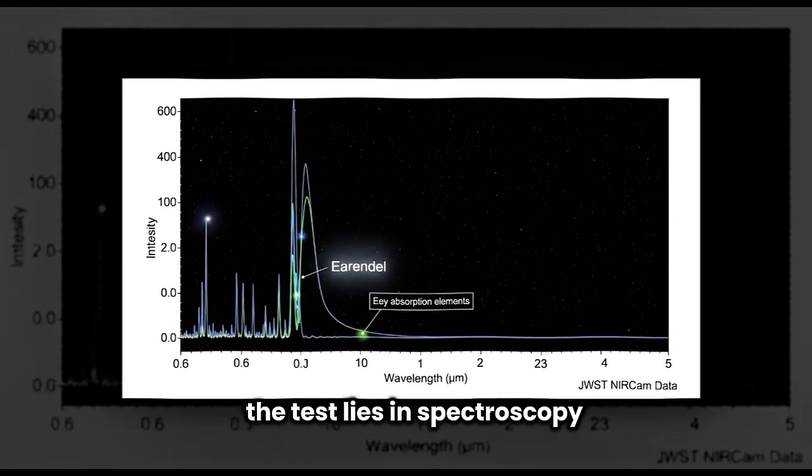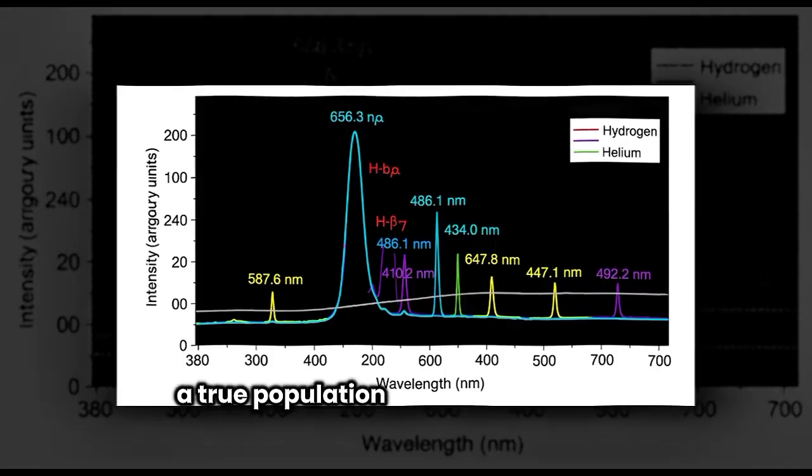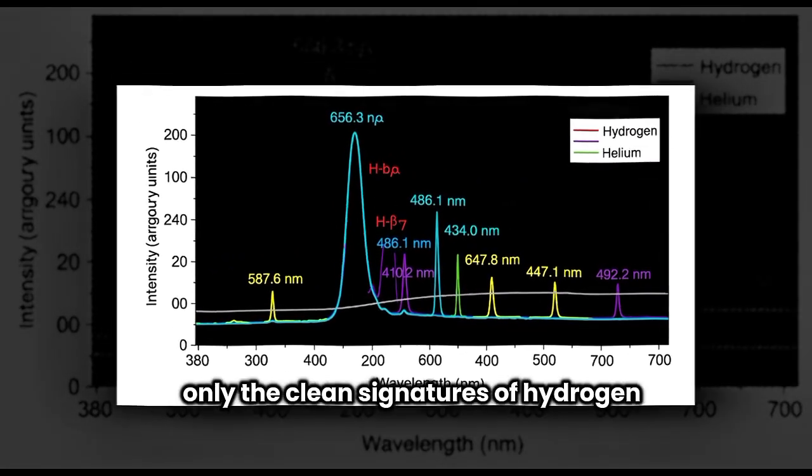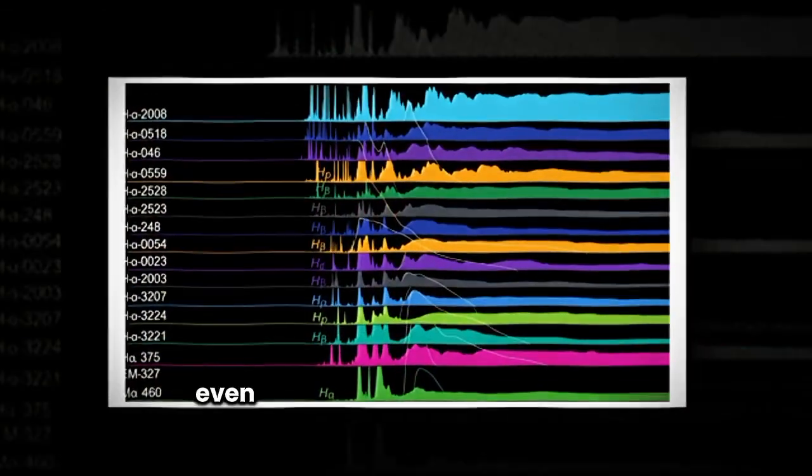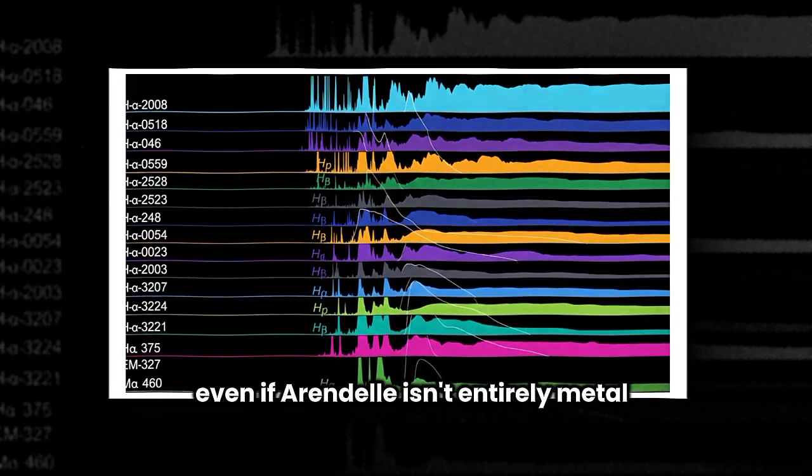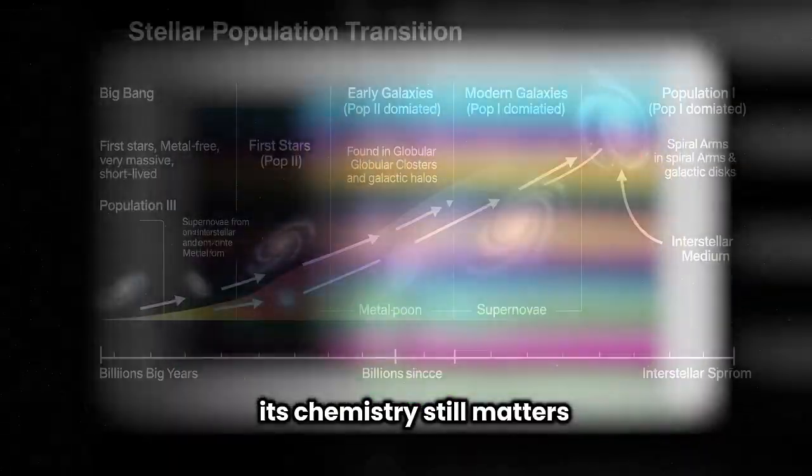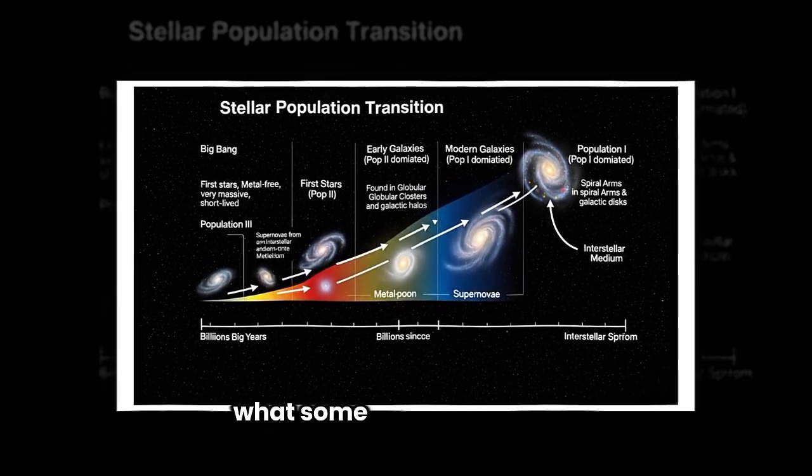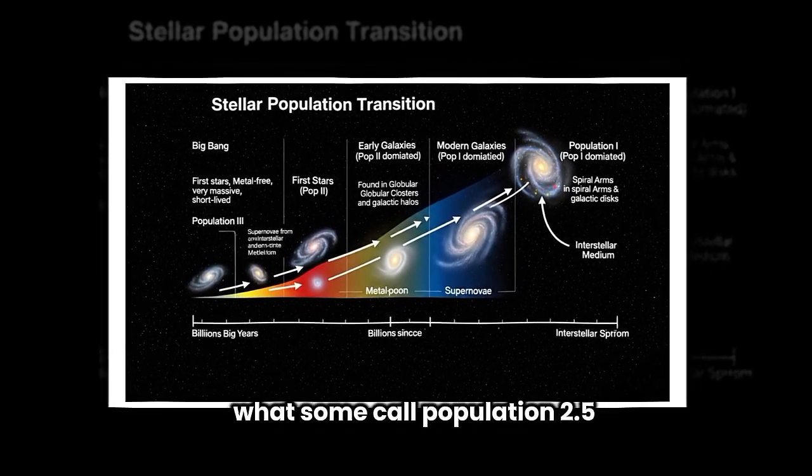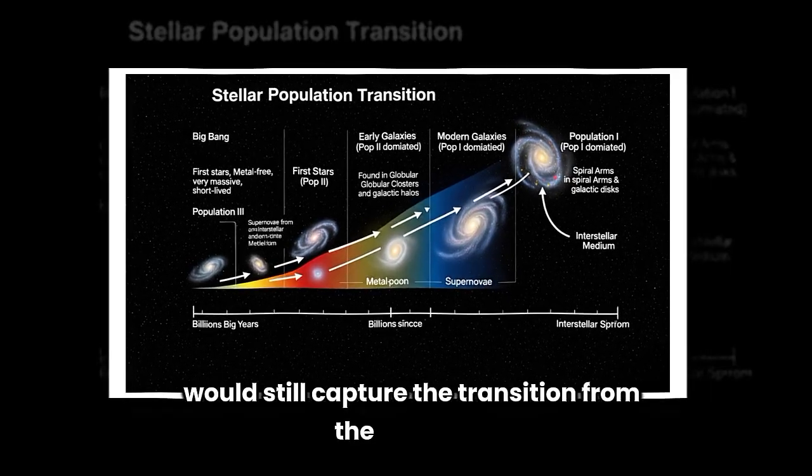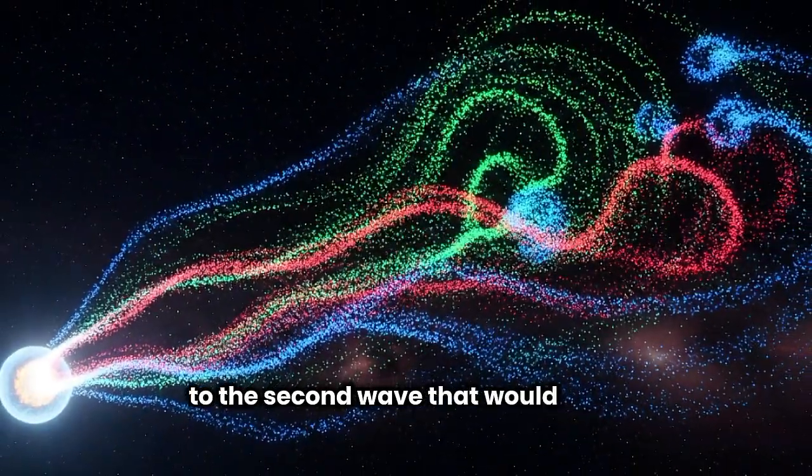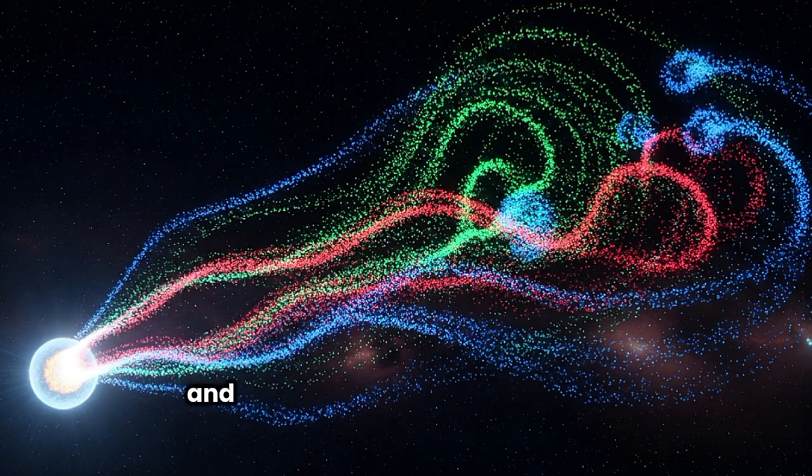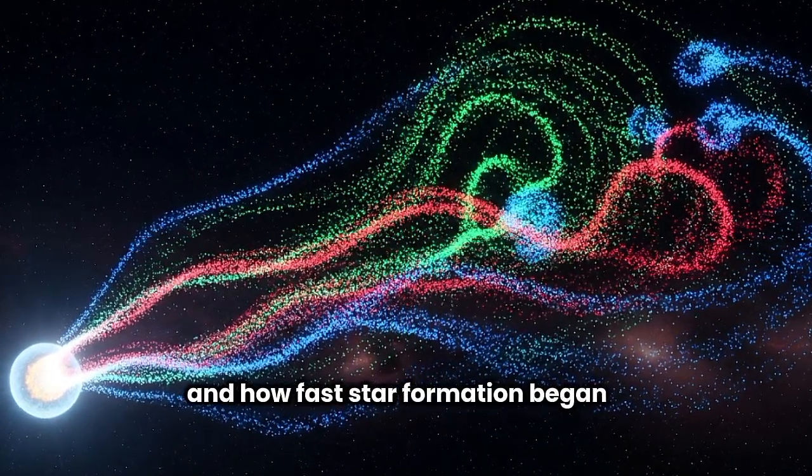The test lies in spectroscopy. A true Population 3 star should show no heavy elements at all, only the clean signatures of hydrogen and helium. Even if Earendel isn't entirely metal-free, its chemistry still matters. A star with extremely low metallicity, what some call Population 2.5, would still capture the transition from the first stars to the second wave. That would tell us how quickly galaxies seeded themselves with heavier elements, and how fast star formation began to accelerate.